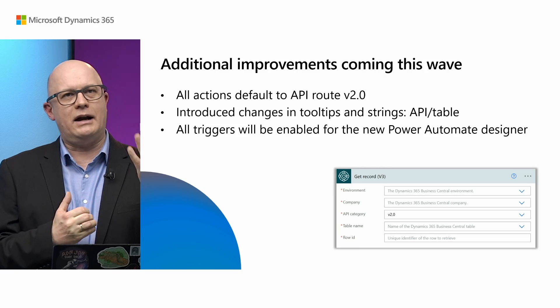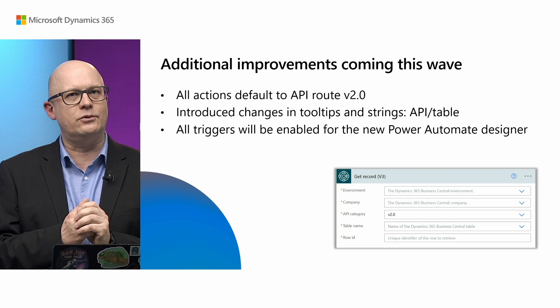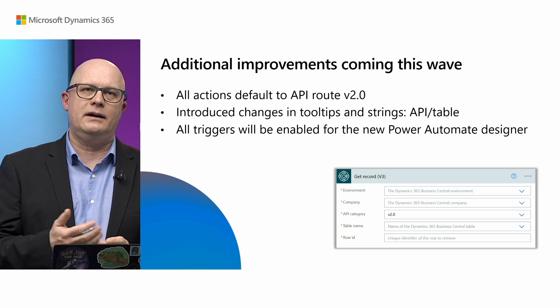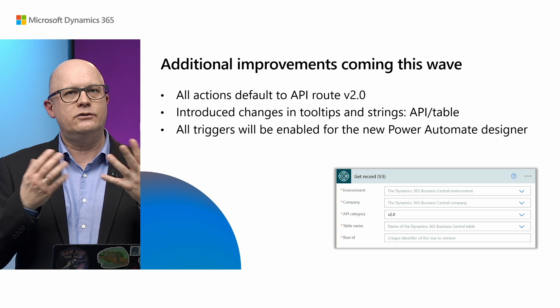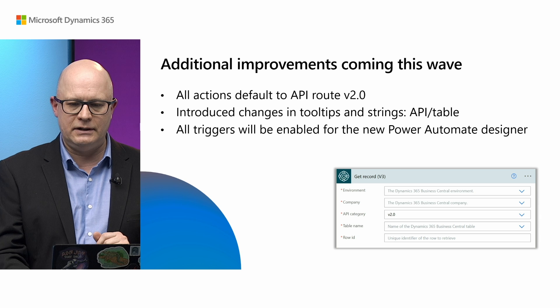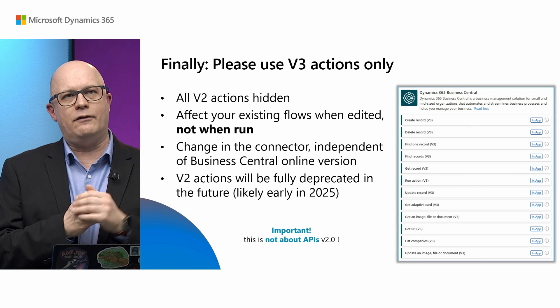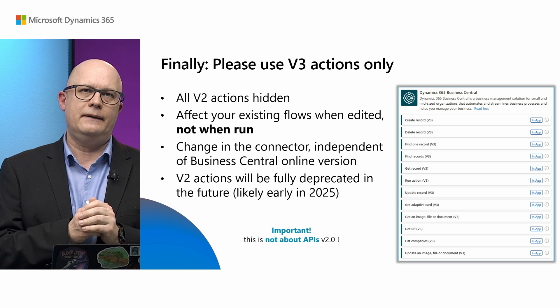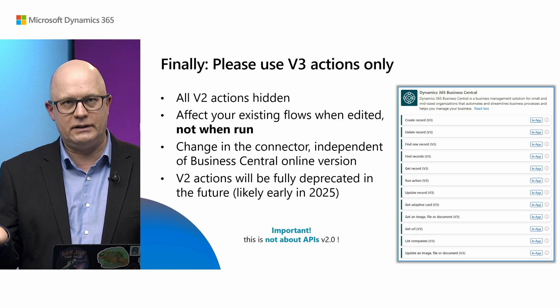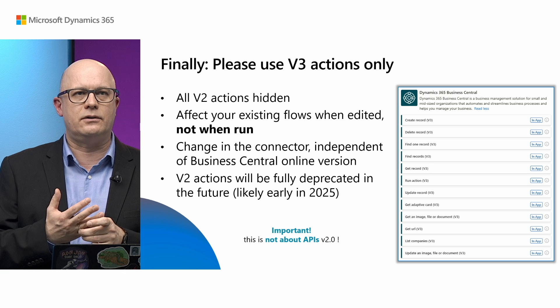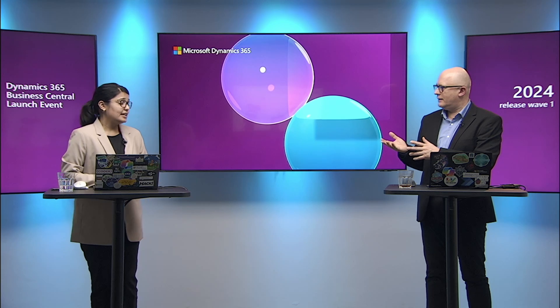Let's talk about a few other updates in our connector. We have added a way to default the API route in our actions, making it even easier to create flows. We have updated some tooltips and made the triggers available in the new Power Automate Designer. One other change is that we have hidden the V2 actions — the old actions previously available in our connector. Your existing flows that use the V2 actions will continue to run, but we do have a plan to deprecate V2 actions fully next year. Please edit your flows and change them to the current V3 actions.